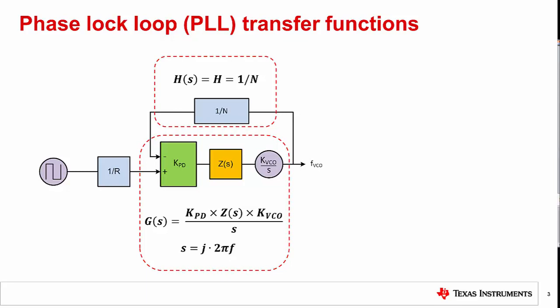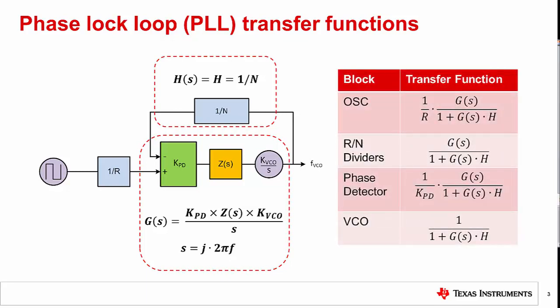To derive the transfer function, one puts a summation block at each point of interest and solves for the ratio of the output noise to the input noise in a closed loop condition. You may notice that all blocks except for the VCO are multiplied by the low pass function G over 1 plus GH. The VCO is multiplied by the high pass transfer function 1 over 1 plus GH. These transfer functions will come up again in other training modules as critical factors in topics such as loop filter design, lock time, and spurious noise.